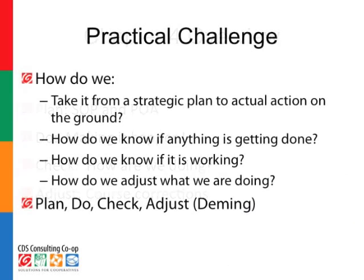So what's the practical challenge here? How do you take it from strategic planning to actual action on the ground? It's not enough to plan — we've got to actually act. How do we know if anything's getting done? How do we know if it's working? And how do we adjust what we're doing as we move through the timeline in the plan? One process put forward by Deming, and familiar to many of you, is Plan, Do, Check, Adjust. Just like it's worked for many conventional businesses, it certainly works very well for cooperatives as we try to bring ends alive.